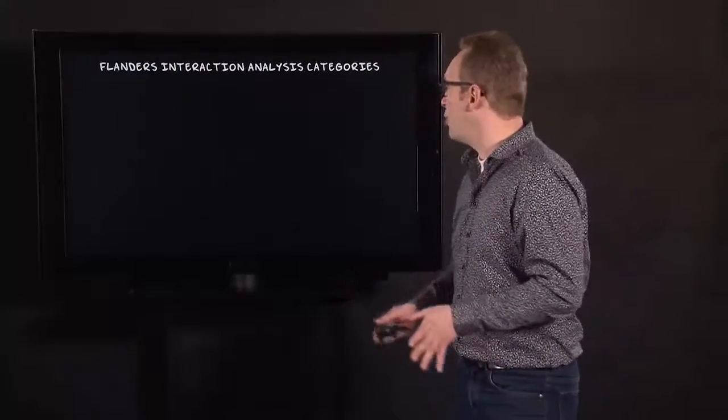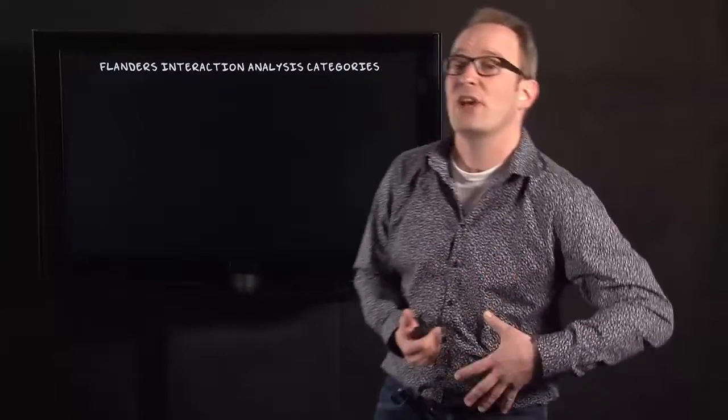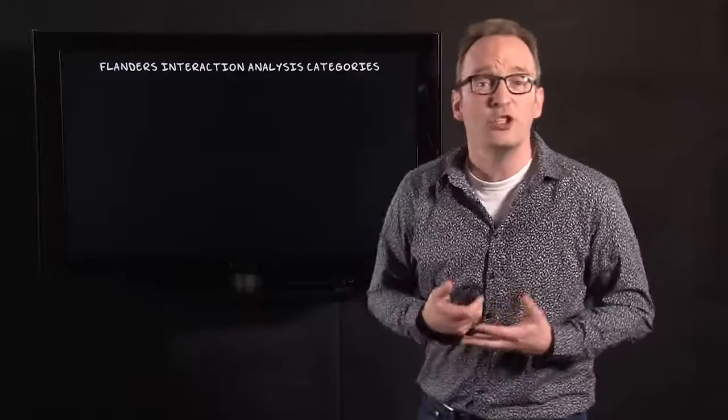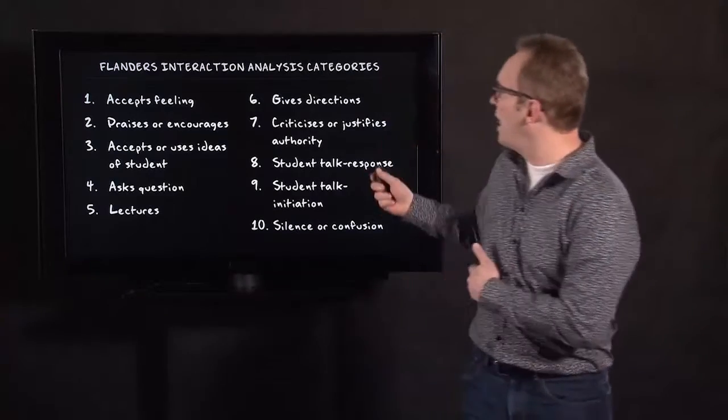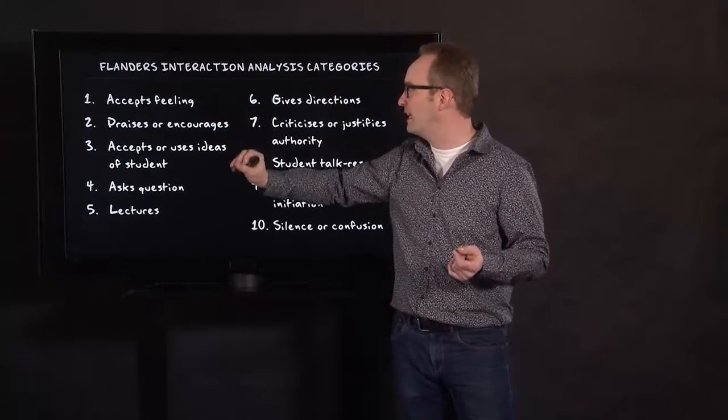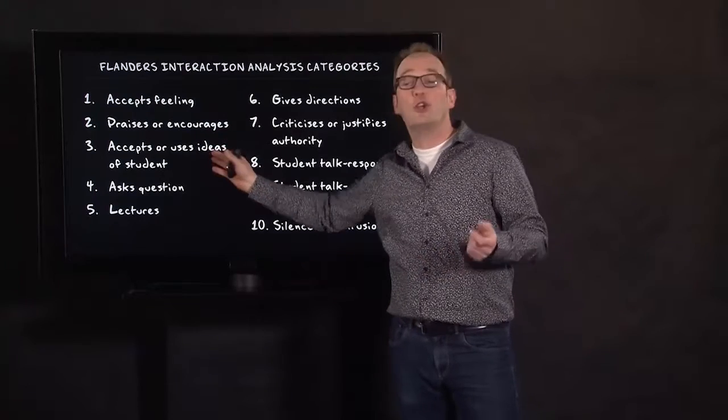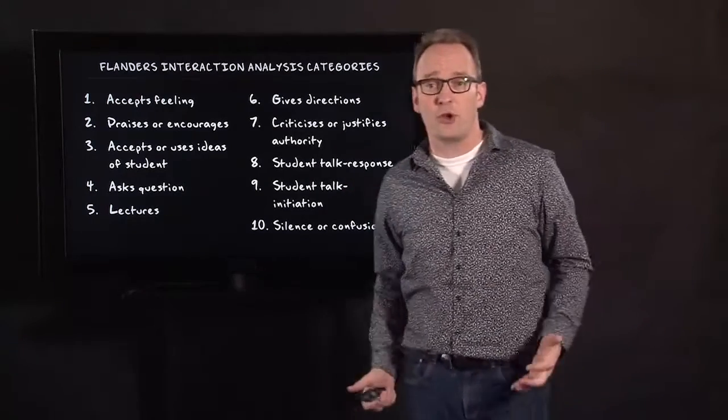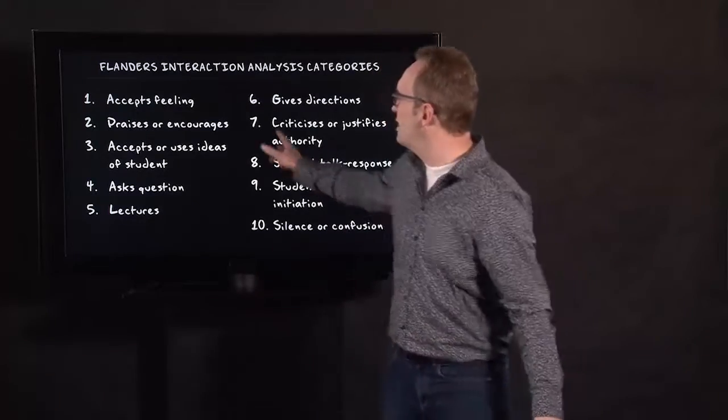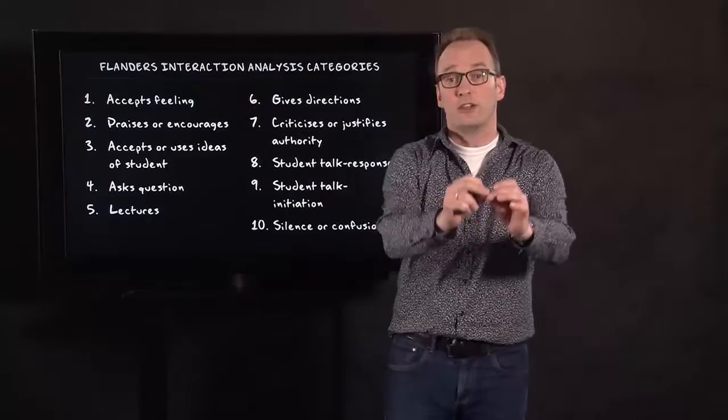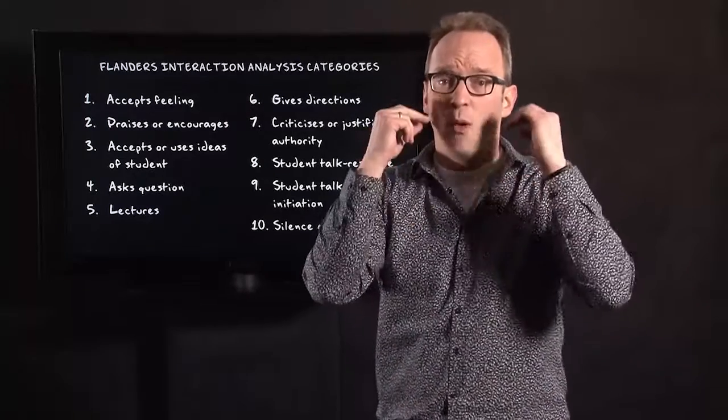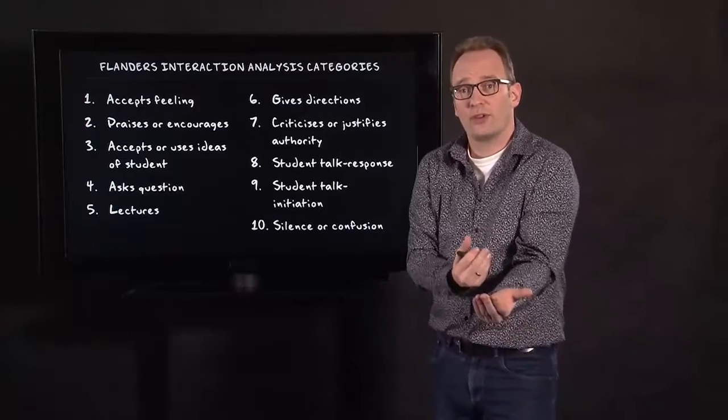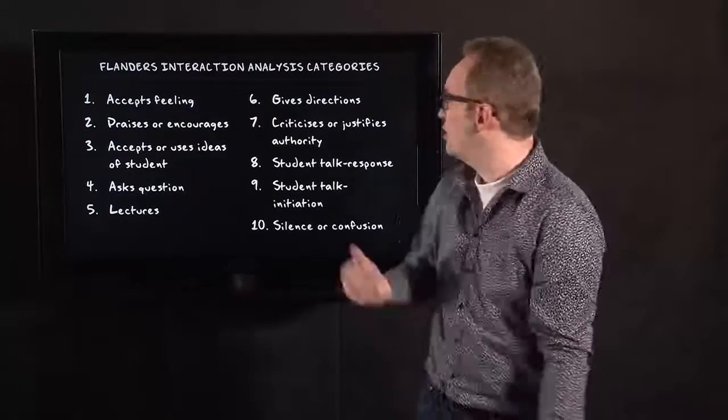An example, a nice example, a classic example of structured observation is the Flanders interaction analysis categories. These categories are used in educational science. And here they are. And what you see here is a teacher can accept feelings or can praise or encourage a student, accept or use ideas of students or lectures. A teacher can criticize or justify authorities. And what you do using this system is you assign these numbers to a certain time slot or to a certain behavior when a teacher, a lecturer is talking.